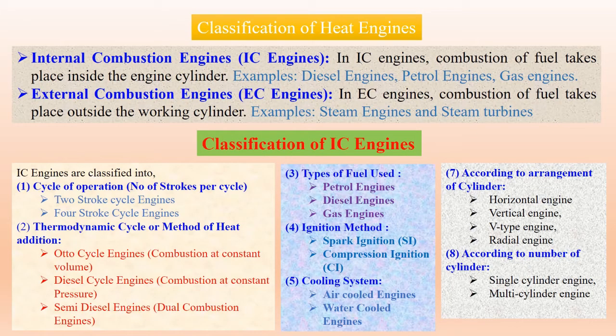This is the classification of Heat Engine and IC Engine. In the IC engine, there are eight different classification criteria. The first is the number of strokes per cycle — four stroke and two stroke. The second is based on the method of heat addition: Otto cycle, diesel cycle, and semi-diesel cycle. The Otto cycle is constant volume; the diesel cycle is constant pressure; the semi-diesel cycle involves both constant pressure and constant volume — also called the limited pressure cycle.